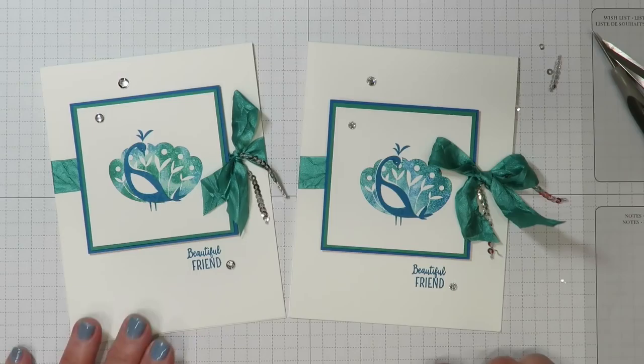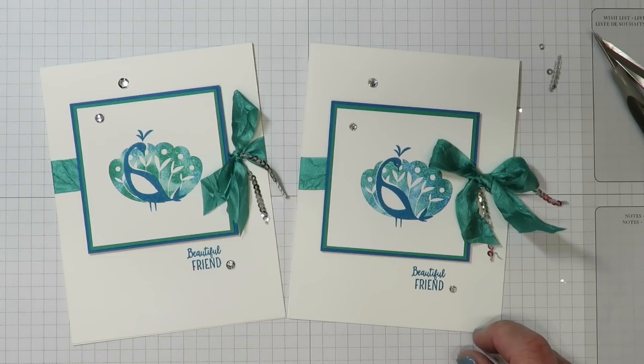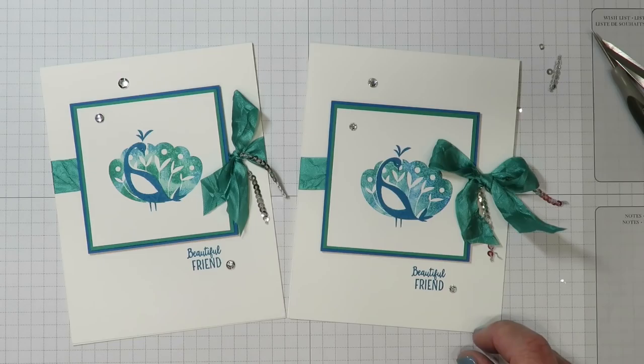Isn't that pretty? So here's the one we made today with the rhinestones. Here's the one I made before you join me with the sequins. I don't know which one do you like better. Leave me a comment.